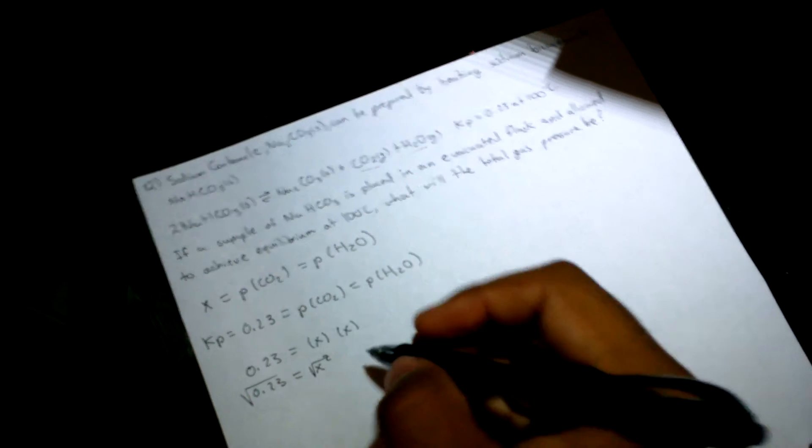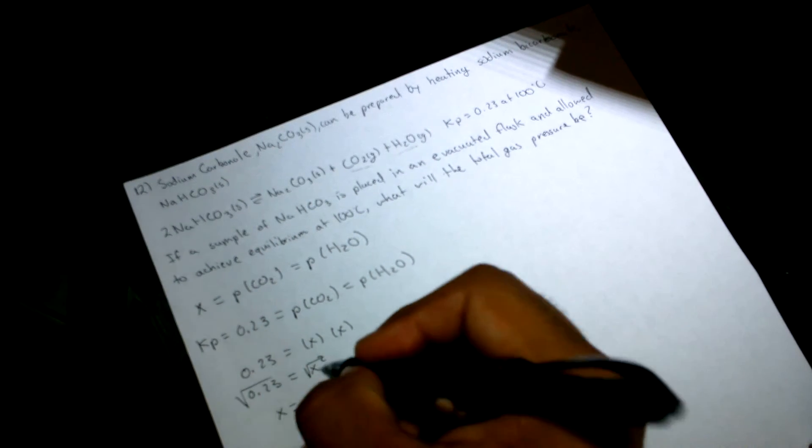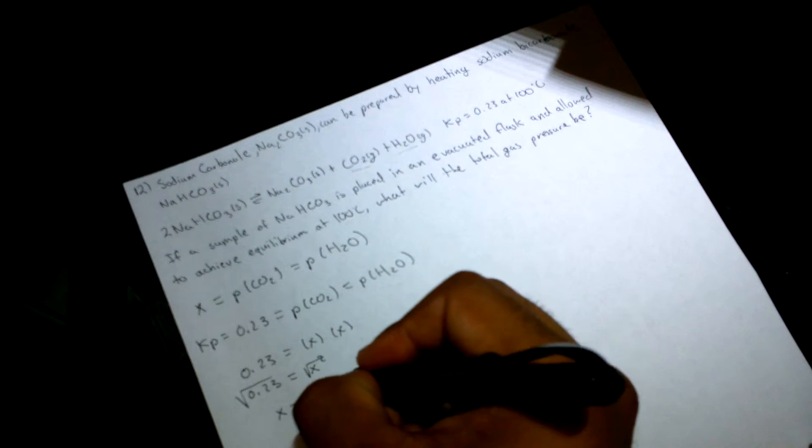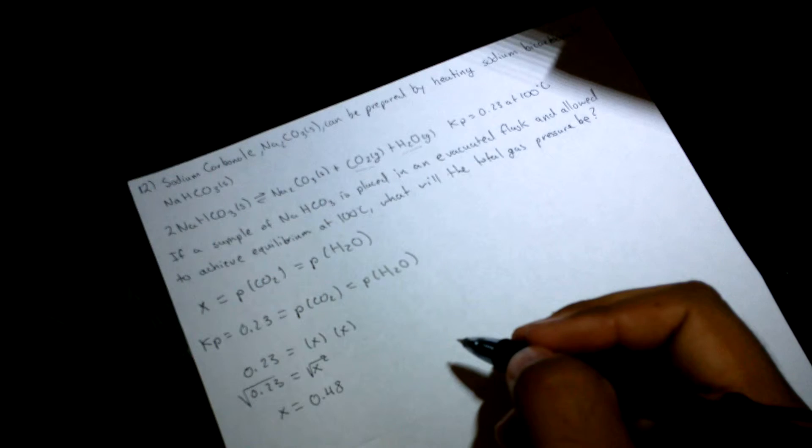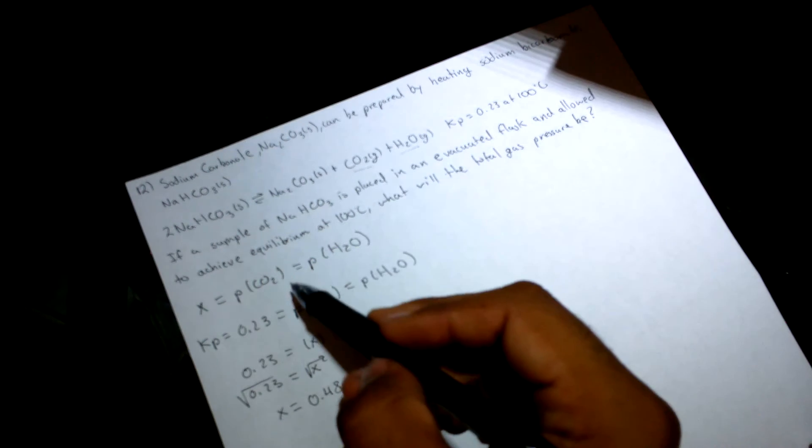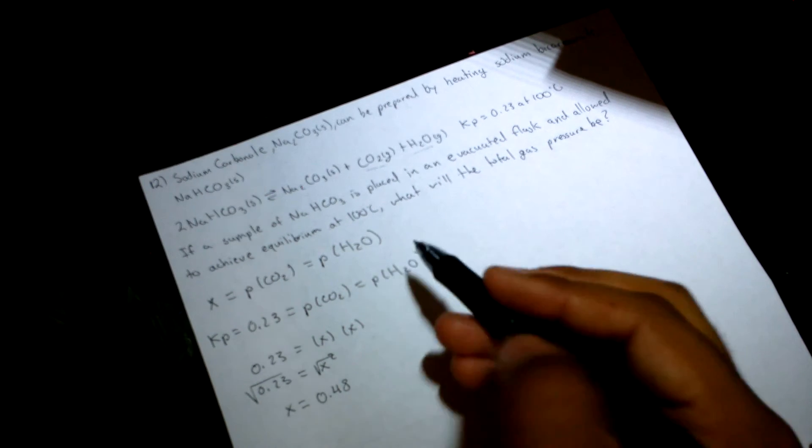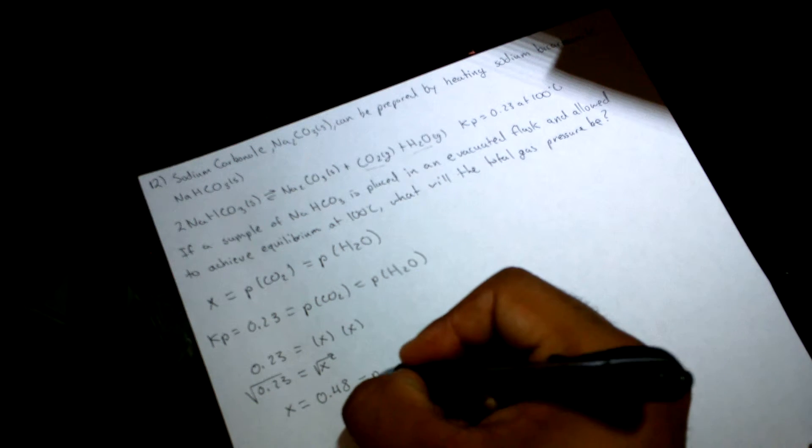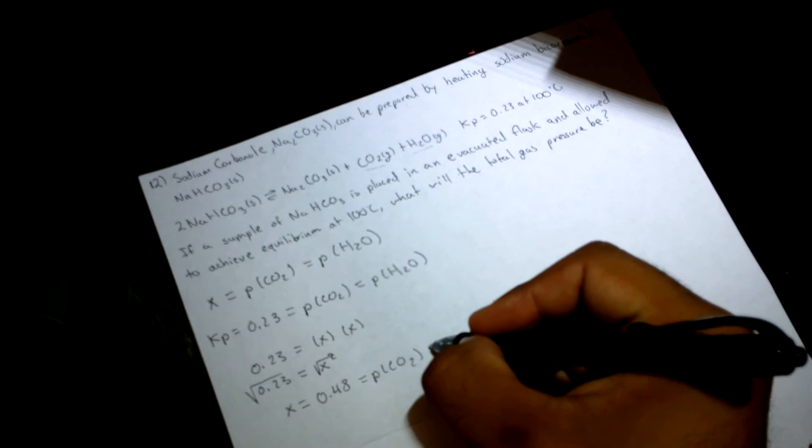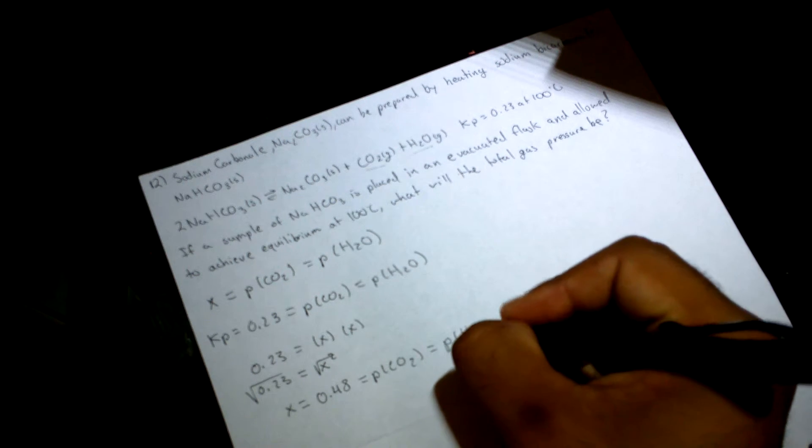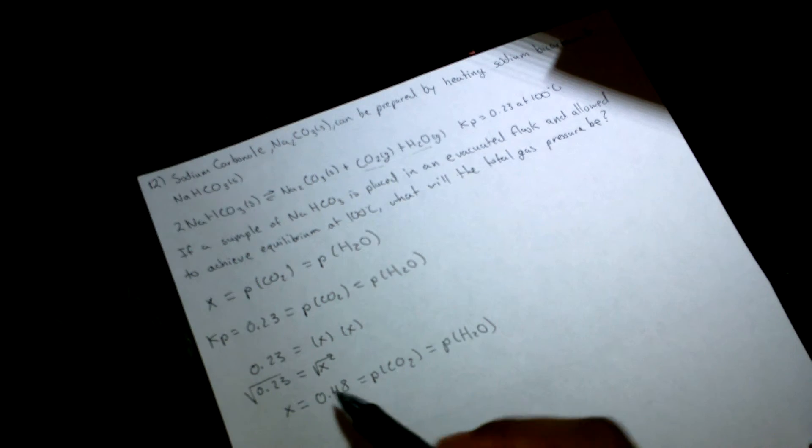We can say that x equals 0.48. Looking at our original equation, 0.48 equals the pressure of CO2 which also equals the pressure of H2O.